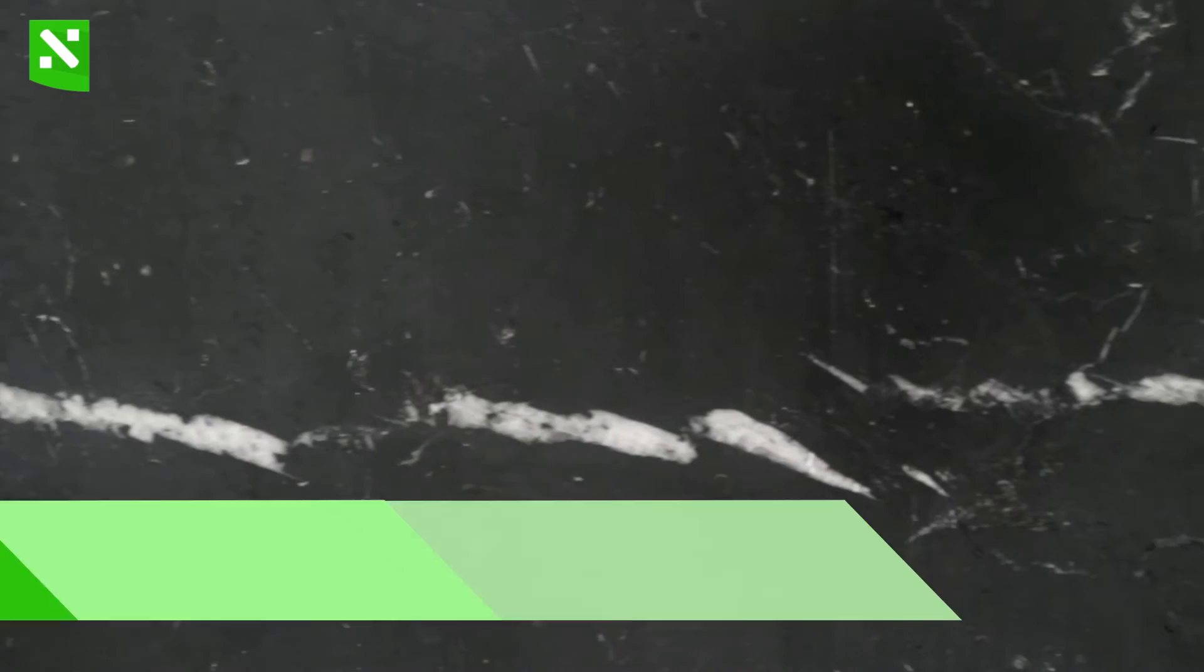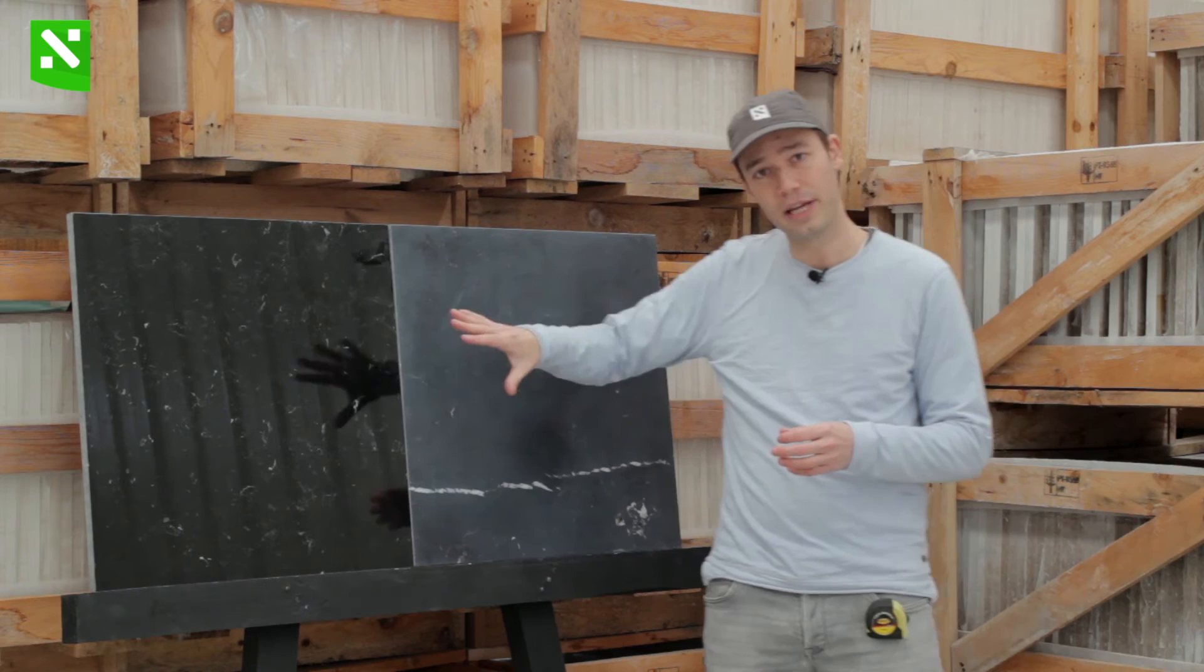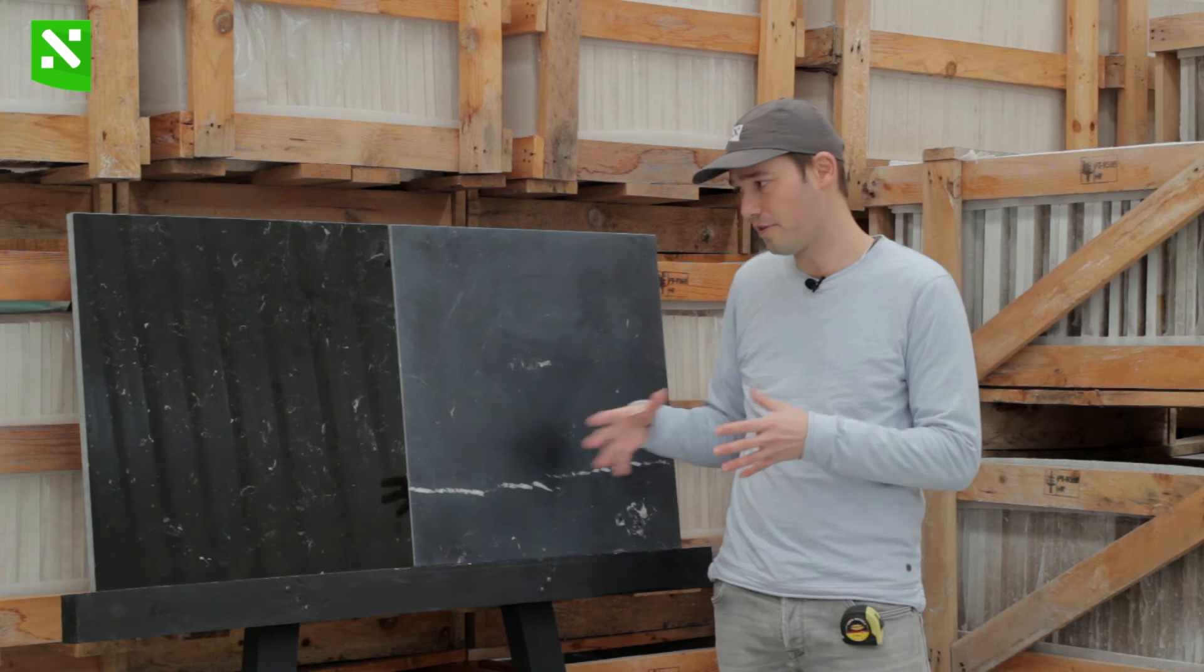And then what you have are just these occasional white calcite. On this specific tile you can see this white vein. The white calcite is quite strong, quite visible. On this one you don't have that, but you can expect both on a first selection Negro Marquina.